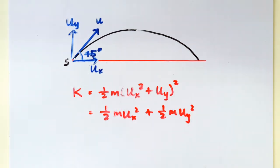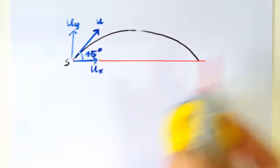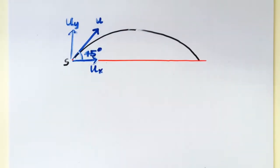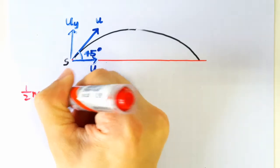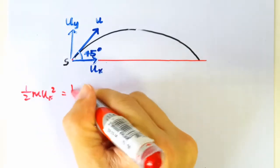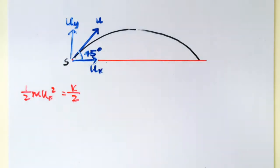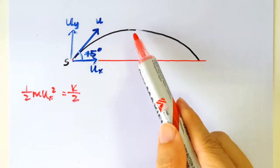Alright, so I'm going to write this thing on the side here. So we have formed this conclusion that half M Ux square is actually K over 2. Let's move on to solving the first part of this problem.